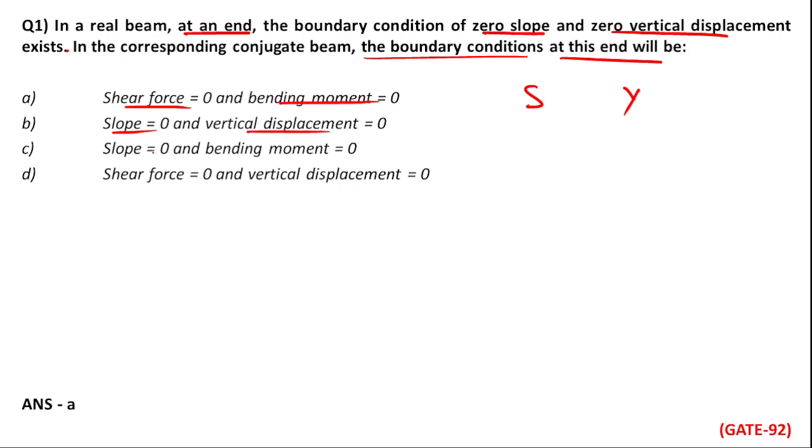Slope is equal to zero and displacement zero. Slope is equal to zero, bending moment is equal to zero. Slope is equal to zero and bending moment is equal zero. Shear force is equal to zero and vertical displacement is equal to zero. This is slope. We are all given, what does conjugate beam do?